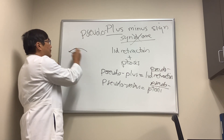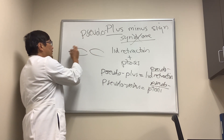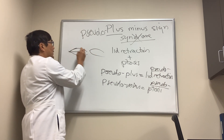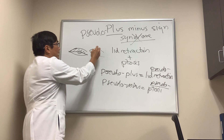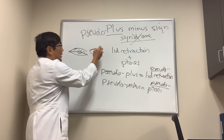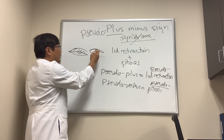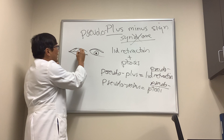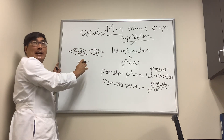If you have a ptosis on one side — the lid is down — and you have a lid retraction on the other side — the lid is up — that's what we mean by the plus-minus.